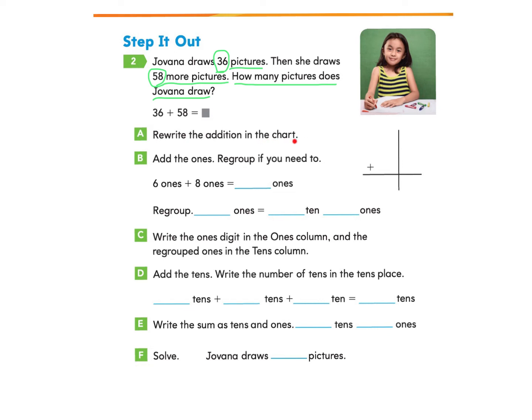Let's take a look at Part A. Rewrite the addition in the chart. Look at this great chart they gave us right here. So let's go ahead and write the problem into this chart. You may want to pause right now and go ahead and do that yourself, or you can just follow along with me. So first there were 36, and then she added 58 more drawings. So we have our tens column, which is here, and our ones column, which is here.